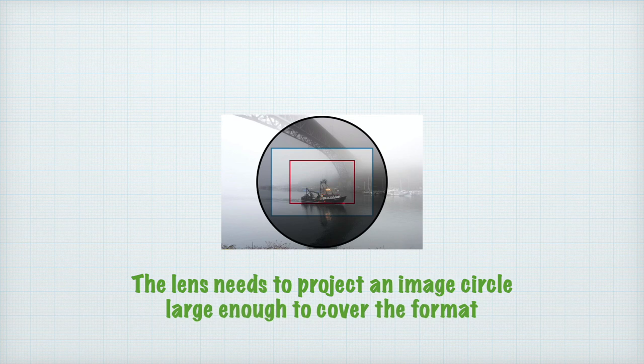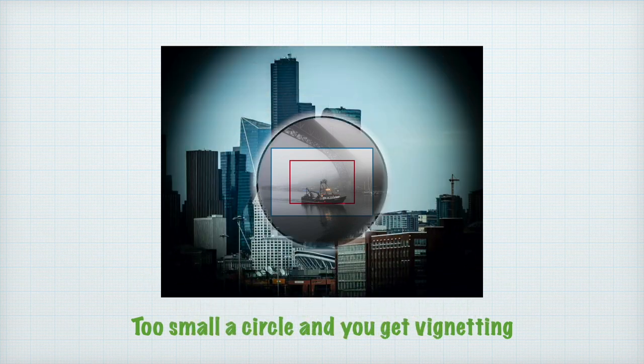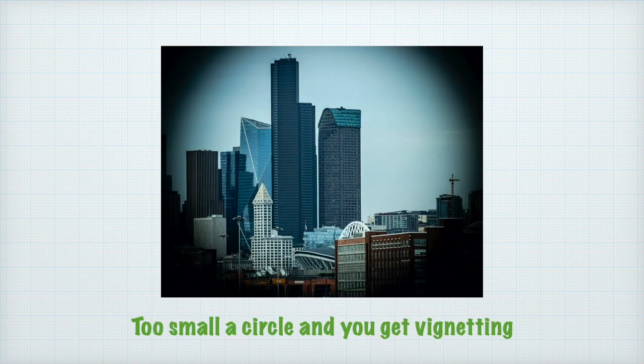There are lenses designed for specific sensor sizes. Part of the design is how big an image circle they project. To keep size and cost down, lenses for smaller formats project a smaller image circle. If you try to use a lens designed for a small sensor on a larger camera, you will run into vignetting as the image circle is smaller than the sensor. You can use a full frame lens on a smaller sensor camera, but not the reverse.